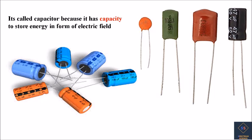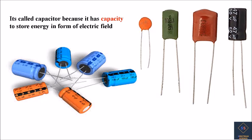It is called a capacitor because it has the capacity to store energy in the form of an electric field. There are a variety of capacitors available in the market and each has a specific range of application. For example, the capacitor used to reduce ripple in the DC supply will not work for high frequency applications.